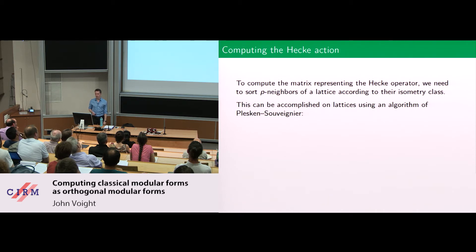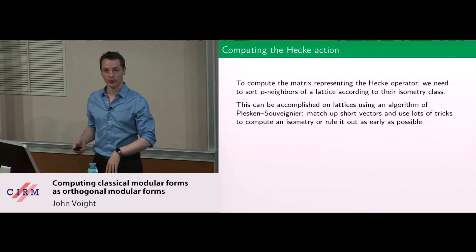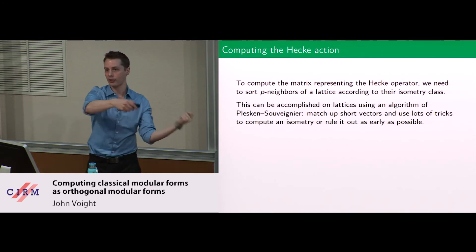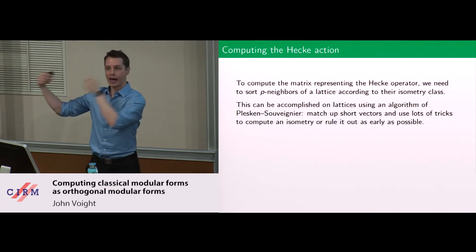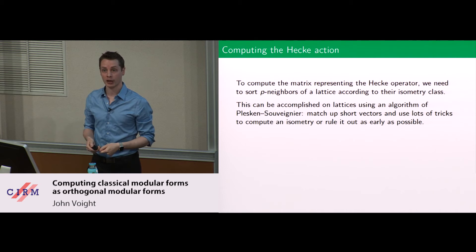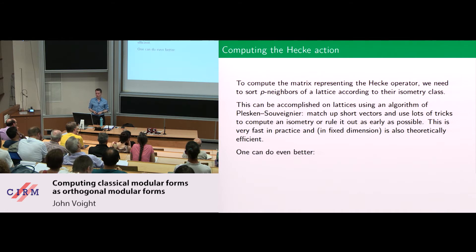The first way to check isometry is the algorithm of Plesken and Souvigner — if I have a lattice in a quadratic space, everything over Z and Q, I can check for isometry. It matches up short vectors and uses lots of other tricks to compute an isometry or rule it out as early as possible. An isometry must take all short vectors of a given length and map them to the corresponding short vectors. So pretty soon you discover there isn't an isometry, or what the candidate isometry is, and then you just check. That's extremely efficient, implemented in Magma.